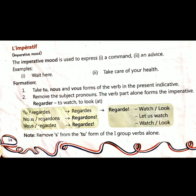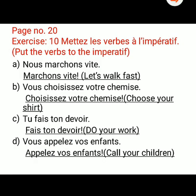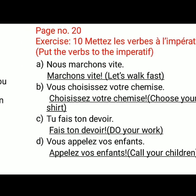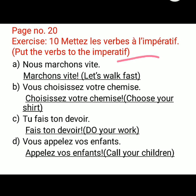There is one exercise — exercise number 10 on page number 20. You have to convert these verbs into imperative form, and it is very easy. The rule is that we have to cut the pronoun. Nous means 'we,' and 'we' is the pronoun here. So in this exercise, we just cut 'nous' and the remaining part stays the same. At the end, you also have to put an exclamation mark.